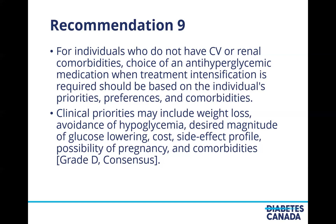Recommendation nine states that for individuals who do not have cardiovascular or renal comorbidities, the choice of an antihyperglycemic medication when treatment intensification is required should be based on the individual's priorities, preferences, and comorbidities. Those priorities may include weight loss, avoidance of hypoglycemia, desired magnitude of glucose lowering, cost, side effects, the possibility of pregnancy, and other comorbidities. For patients without a specific indication for a specific medication, the choice of agent should be patient-centered and focused around that specific patient's priorities.